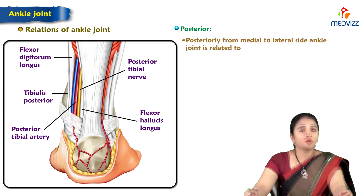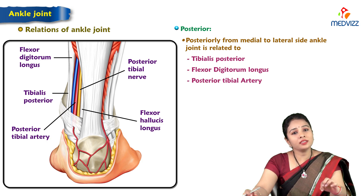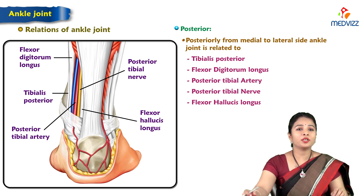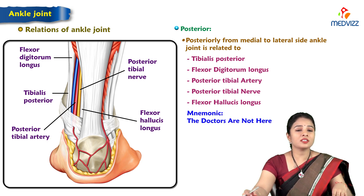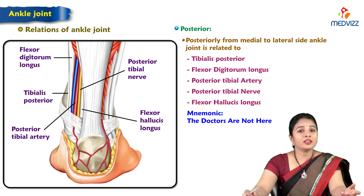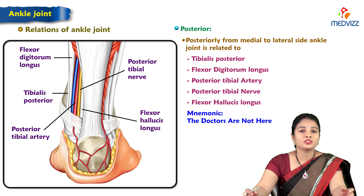Posteriorly, from medial to lateral, the ankle joint is related to: tibialis posterior, flexor digitorum longus, posterior tibial artery, posterior tibial nerve, and flexor hallucis longus. A mnemonic: 'The Doctors Are Not Here' — T for tibialis posterior, D for flexor digitorum longus, A for posterior tibial artery, N for posterior tibial nerve, H for flexor hallucis longus.